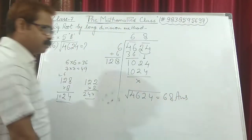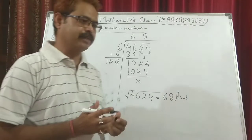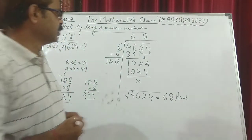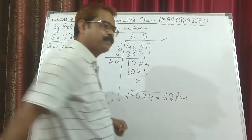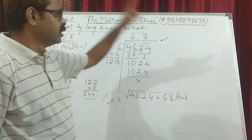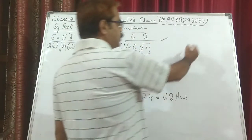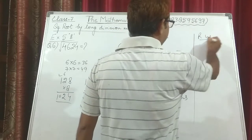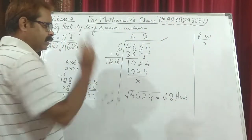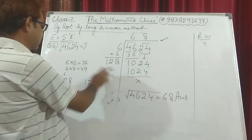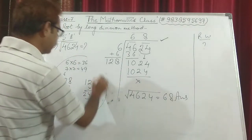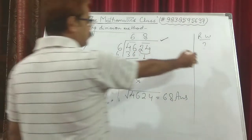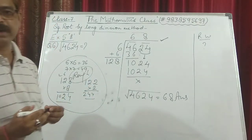Whenever you are solving a question by the division method, this process has to be shown. This is very important — this process has to be shown in the fair notebook. You are not going to put it in a rough column; this division work has to be in the main fair work. Rough calculations can go in the rough column, but the division method steps must appear in fair.